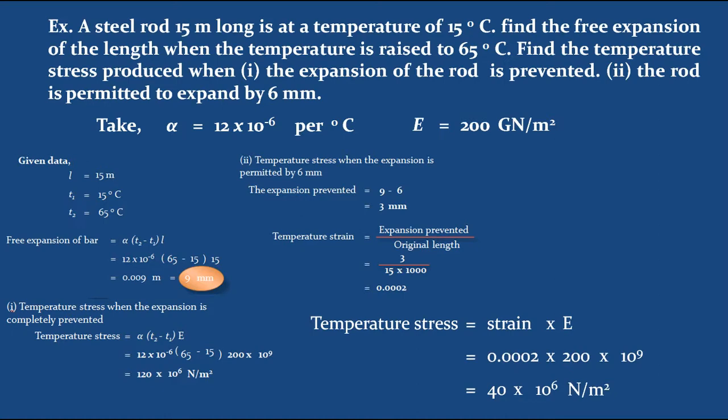Whenever the expansion is prevented, in that condition only the body can experience the stress. Based upon that we need to find the strain. If complete expansion is prevented we use the basic formulas; otherwise strain should be determined as expansion prevented divided by original length. If you still have any doubts please feel free to give a comment and I will try to clarify. Don't forget to subscribe to my channel, and thanks for watching. Thank you all.